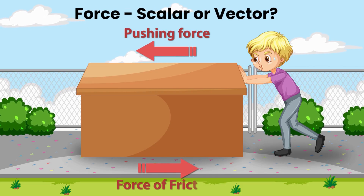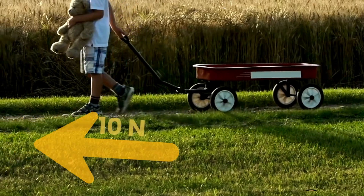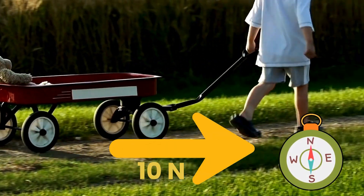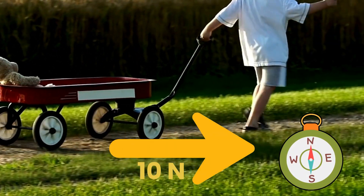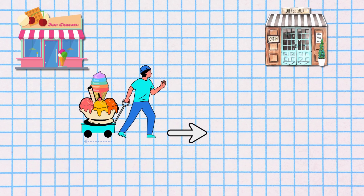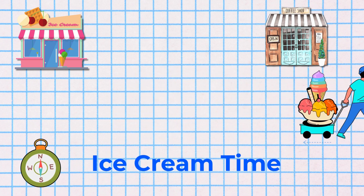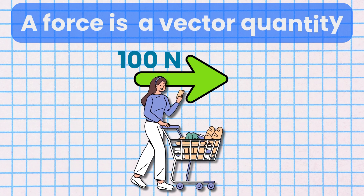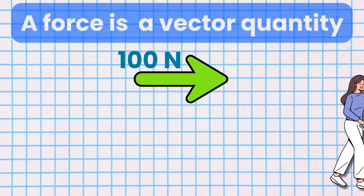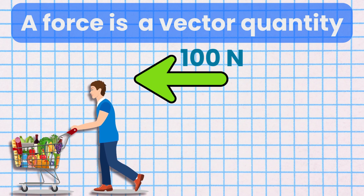Is force a scalar or a vector quantity? Pulling a wagon west with 10 newtons is not the same as pulling it east with 10 newtons. Applying force in different directions, even with the same magnitude, leads to different outcomes. A force is classified as a vector quantity because it requires both magnitude — the strength of the force in newtons — and direction.